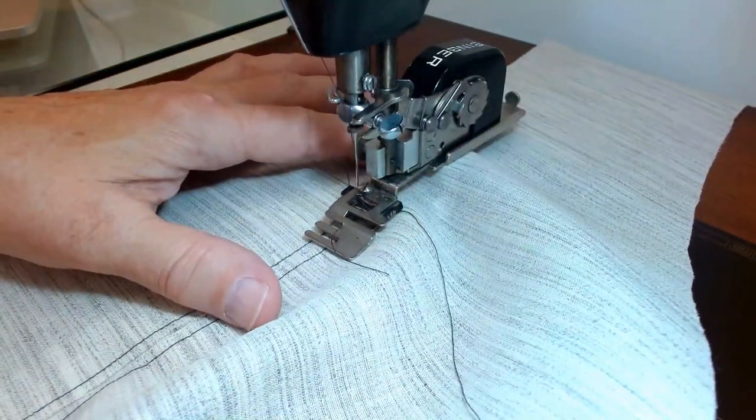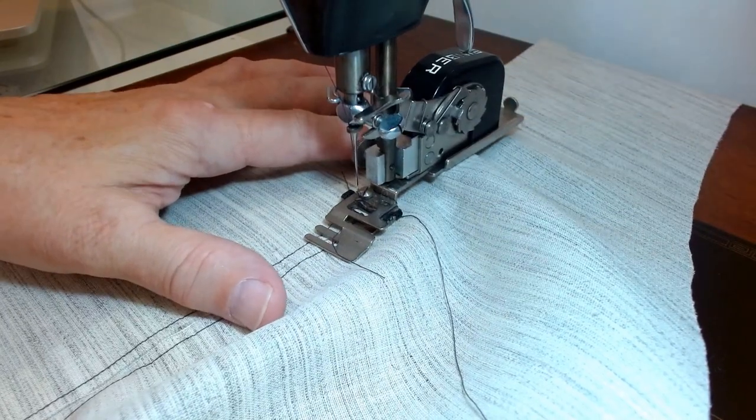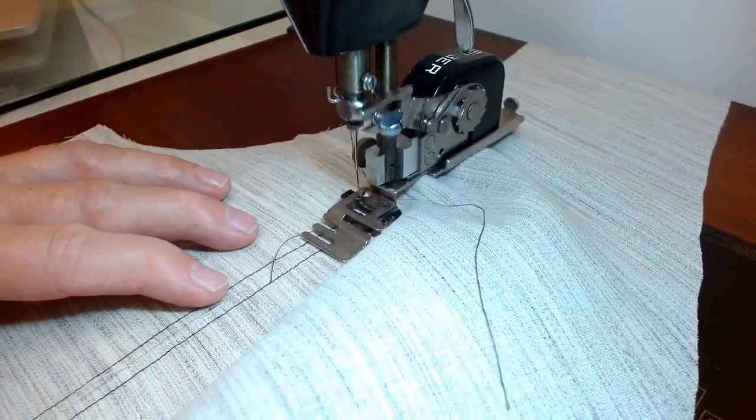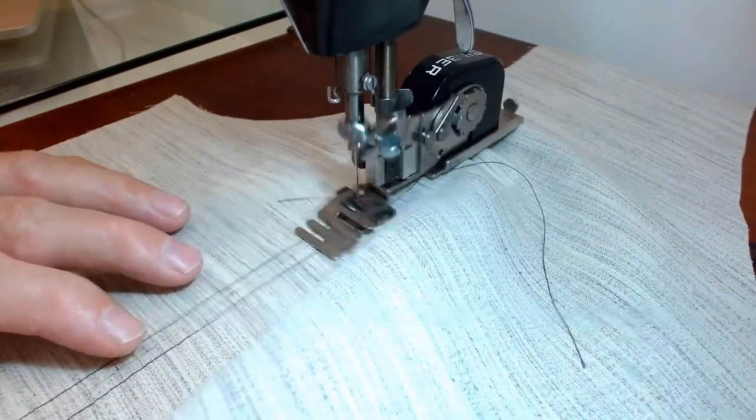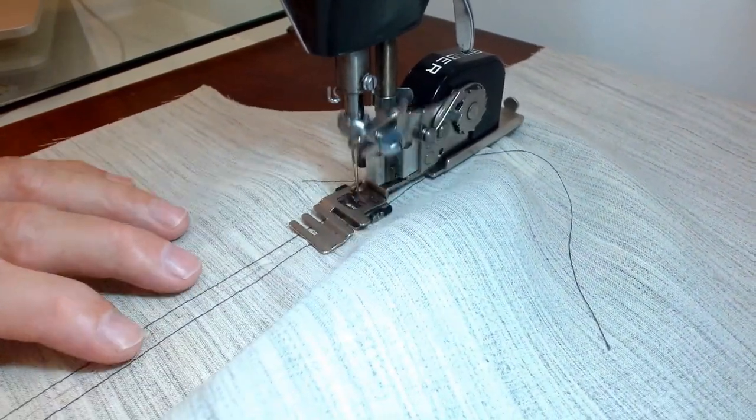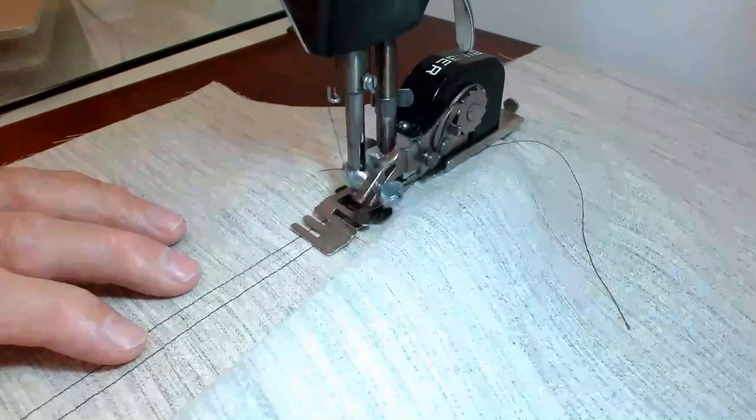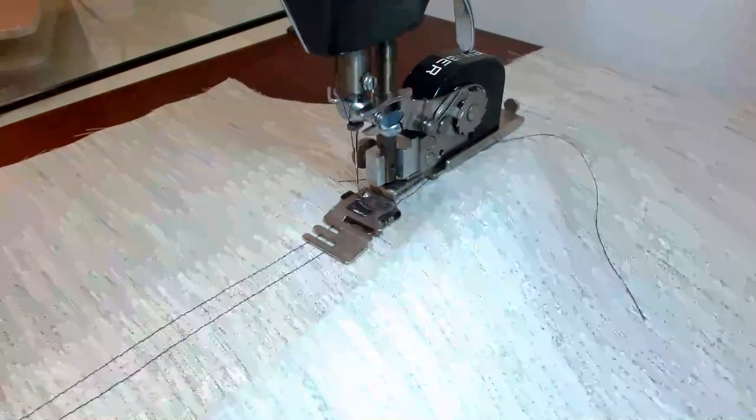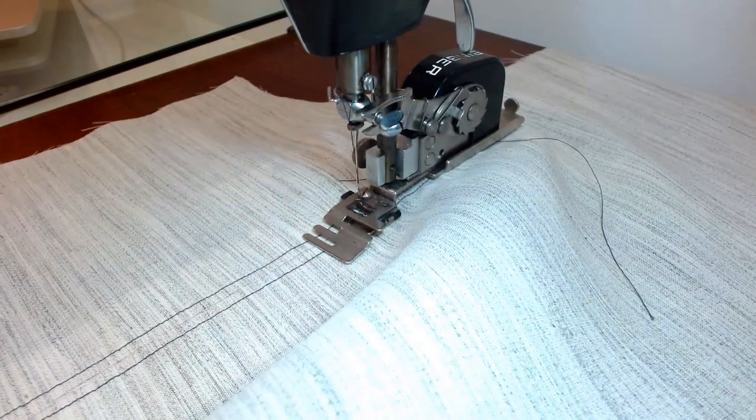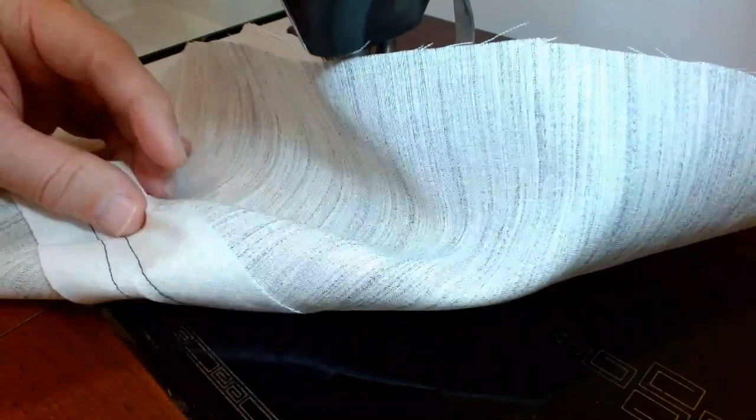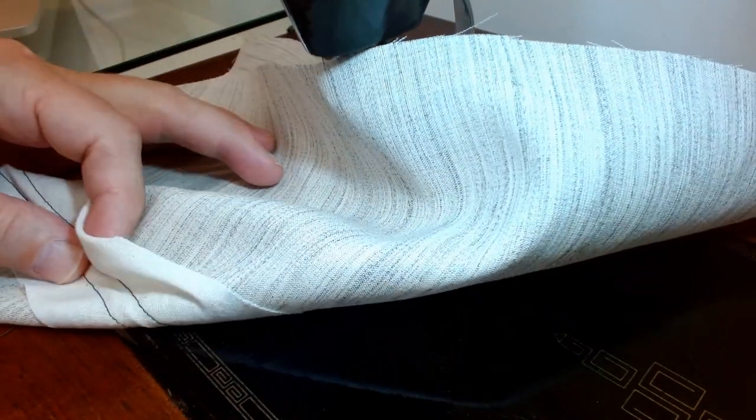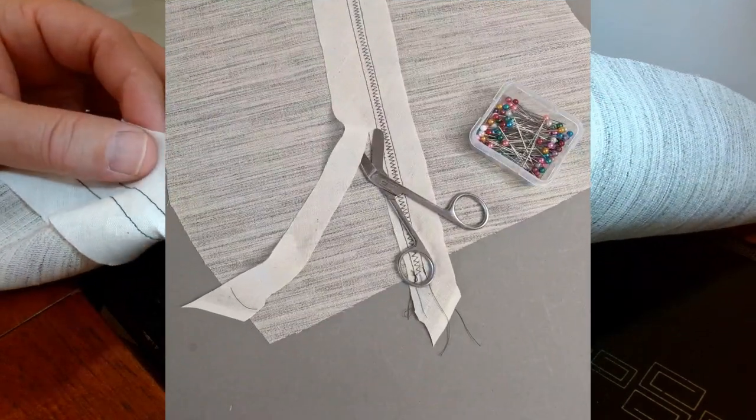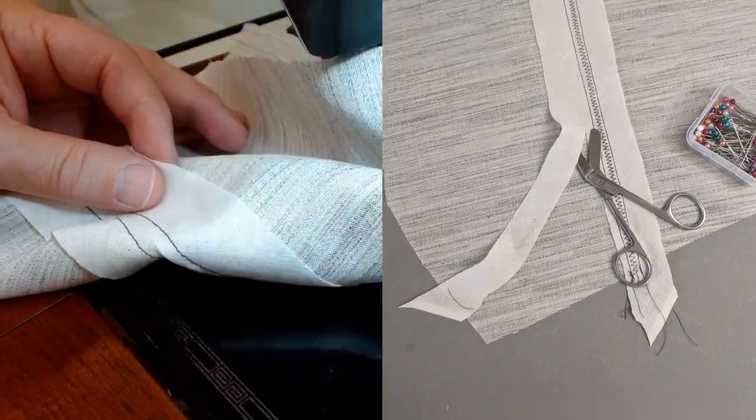So let's just zigzag this closed. I love using these old attachments. They are so much fun. So I will continue to zigzag this. In the end, if you want, you can come back and you can trim this muslin down. And we are done putting the dart in the front of a tailored garment.